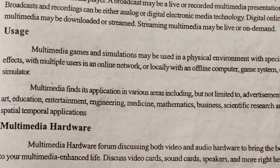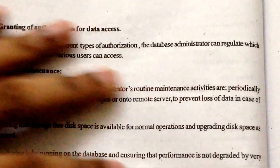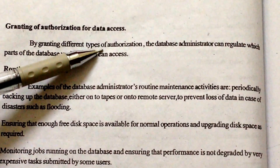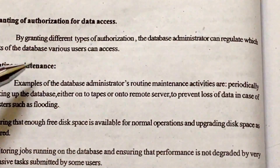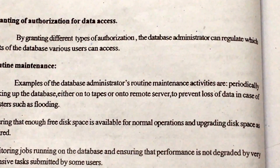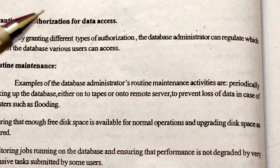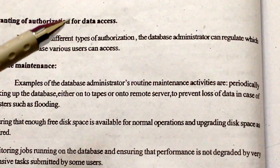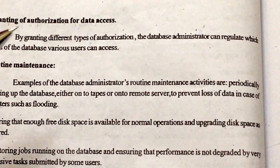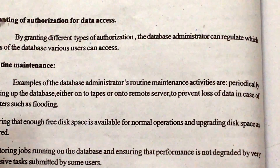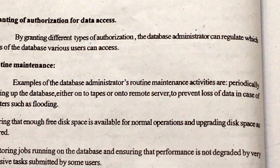The next responsibility is granting of authorization for data access. By granting different types of authorization, the database administrator can regulate which parts of the database various users can access. For example, if an organization has 10 or 100 people, their data needs differ — finance people need certain information, management needs different information. There is no need to give entire access to everybody, so the DBA controls which type of access is given to which person.